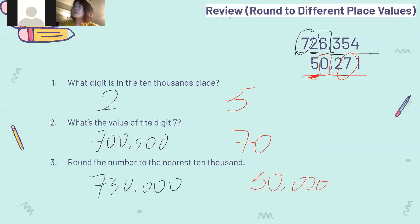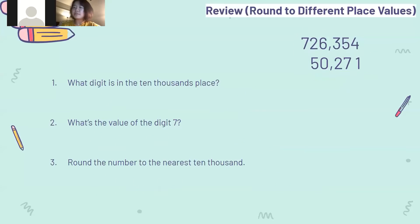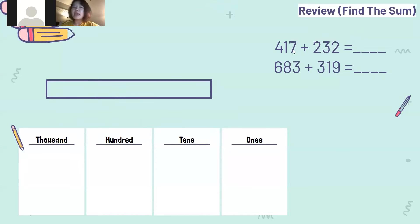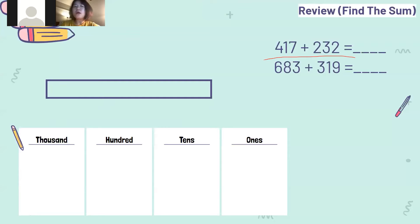And that's all for rounding to different place values. After we finish the first review lesson, here's the second one: find the sum. So let's see this equation and read this problem with me. 417 plus 232 equals. So we will draw a tape diagram to represent this problem. And what are the two parts that make up the whole? 417 and 232.